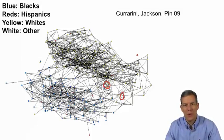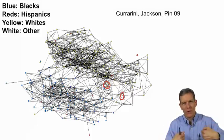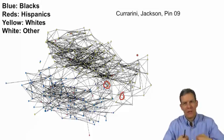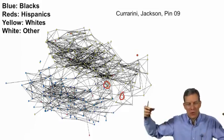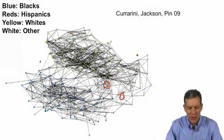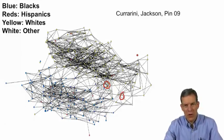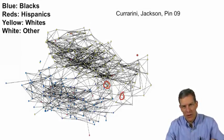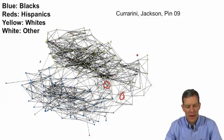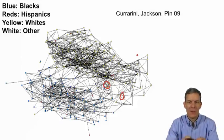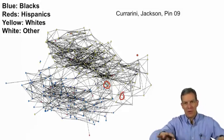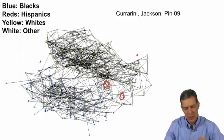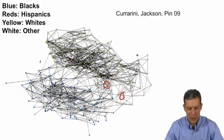This network was drawn using what's known as a spring algorithm. The idea is you think of links like springs trying to pull linked nodes together. A spring algorithm relocates nodes on the page so that nodes connected to each other are pulled closer together, without collapsing everything into one ball — you keep a certain spread of nodes on the page.